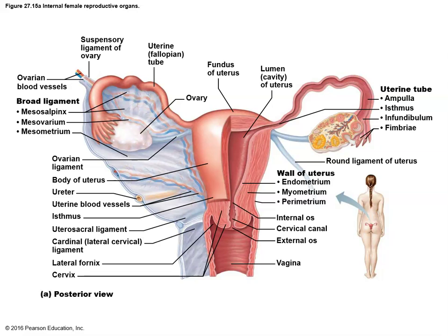An ectopic pregnancy is one that occurs outside of the uterus — the egg implanted, but not in the uterus. That's a serious problem because the uterus is designed to expand as the baby grows, but no other part of the body is designed to expand. So ectopic would be implantation of a fertilized egg — pregnancy, but not in the right place. The odds of an ectopic pregnancy coming to term with a live baby are extremely low, and if it did happen it would require a C-section to deliver.